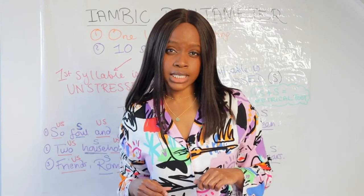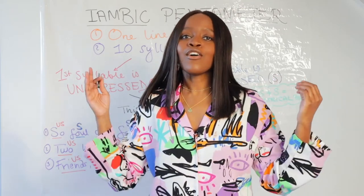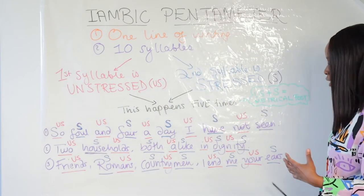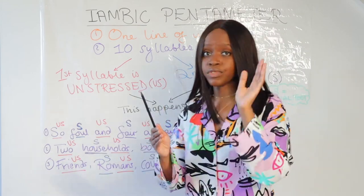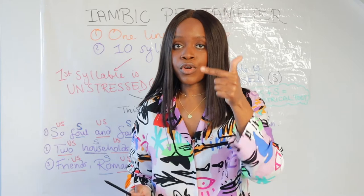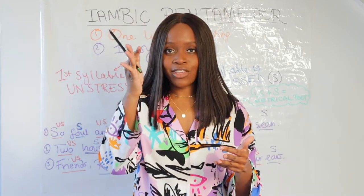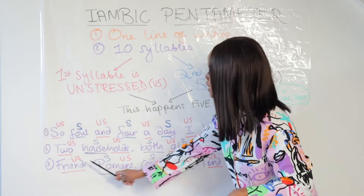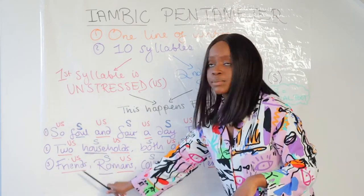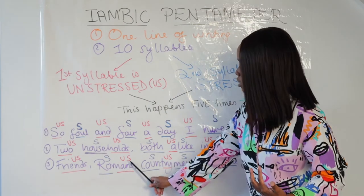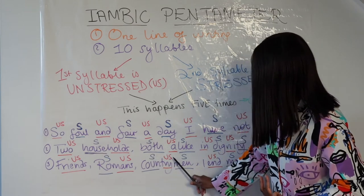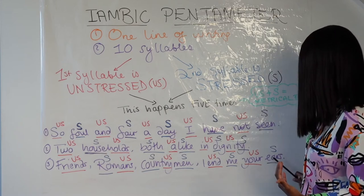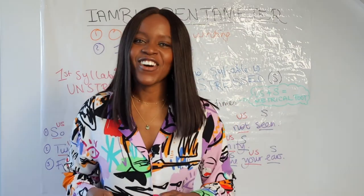The third quotation is from Julius Caesar — this is what Mark Antony says in his very famous speech: 'Friends, Romans, countrymen, lend me your ears.' This is perfect iambic pentameter — ten syllables total. 'Friends' is unstressed, 'Ro' takes a bit longer so it's stressed, 'mans' is unstressed, 'coun' is stressed, 'try' unstressed, 'men' stressed, 'lend' unstressed, 'me' stressed, 'your' unstressed, 'ears' stressed. Ten syllables, five metrical feet.